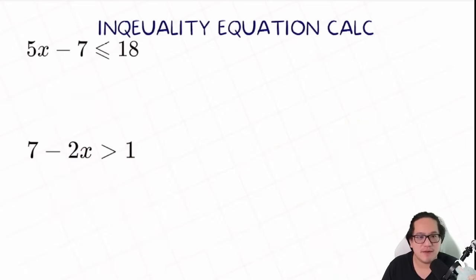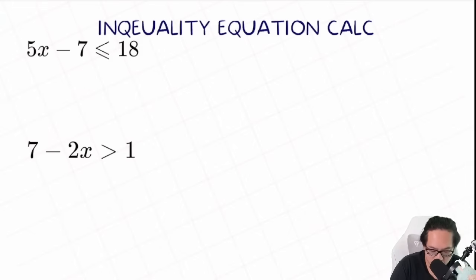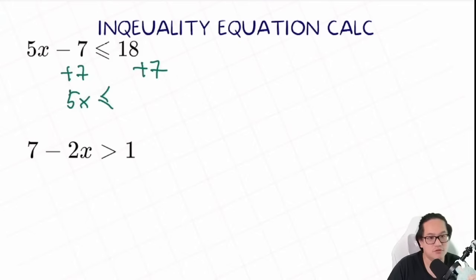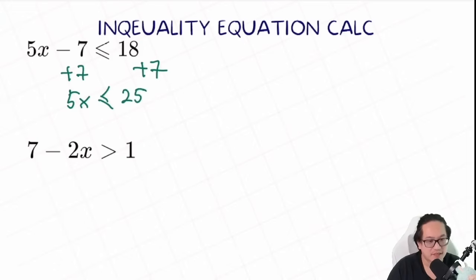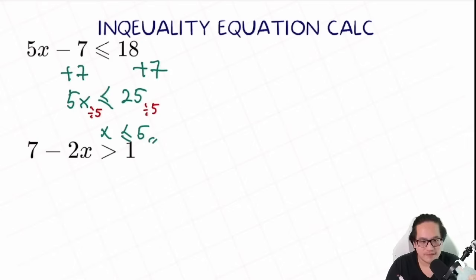Next question: 5x minus 7 smaller or equal to 18. The first step, we need to do the opposite on anything not connected to x. We have minus 7, so we plus 7 on both sides. What we have left: 5x smaller or equal to 18 plus 7, equal to 25. Next step, isolate x. We divide 5 on both sides. Yes, x is smaller or equal to 5.